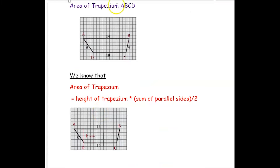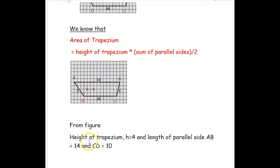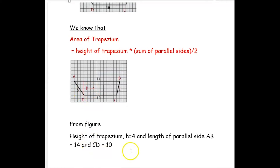Now we are going to find the area of the same trapezium. We have learnt in our previous videos the area of trapezium formula: area of trapezium equals height into sum of parallel sides, divided by 2. From the figure, the height of the trapezium is 4, the parallel side AB is 14, and the parallel side CD is 10.